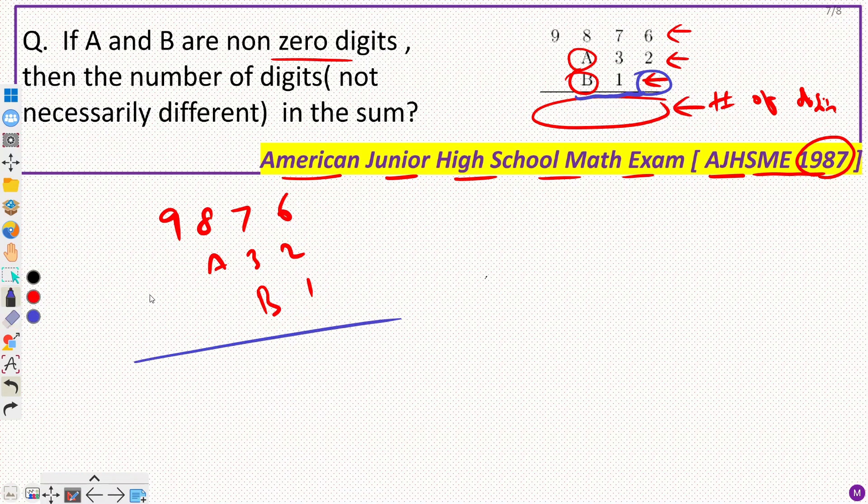Now how can I add them? Because I don't know these digits. So I will have to try one by one. Now notice one thing. I don't have to worry about the sum. I have to worry about only the number of digits in this sum.